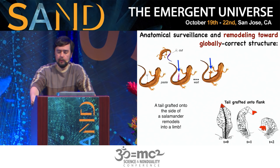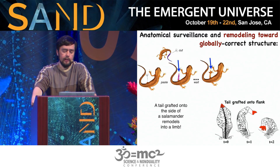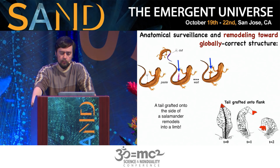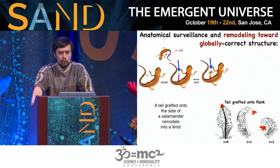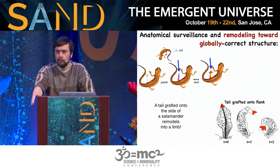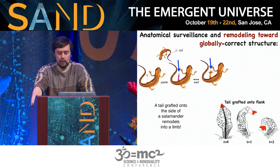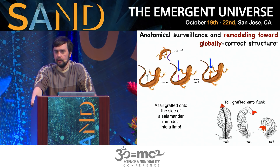Beyond simply regenerating, in some animals this goes further as an example of what's called anatomical surveillance. In one experiment, we take the tail of a salamander and surgically attach it to where a limb is supposed to go. Over some period of months, that tail is remodeled in place into a limb. All the cells of that tail — including cells at the very tip — now need to know they're supposed to be a different organ. They need to understand their identity not at the cellular level, but make decisions about the shape of the whole organ.